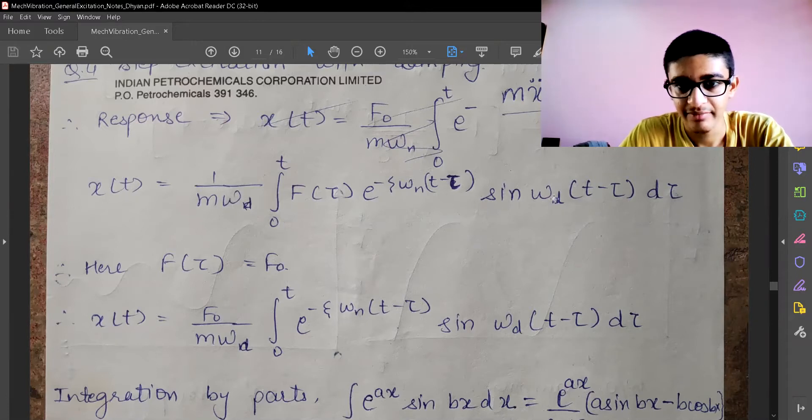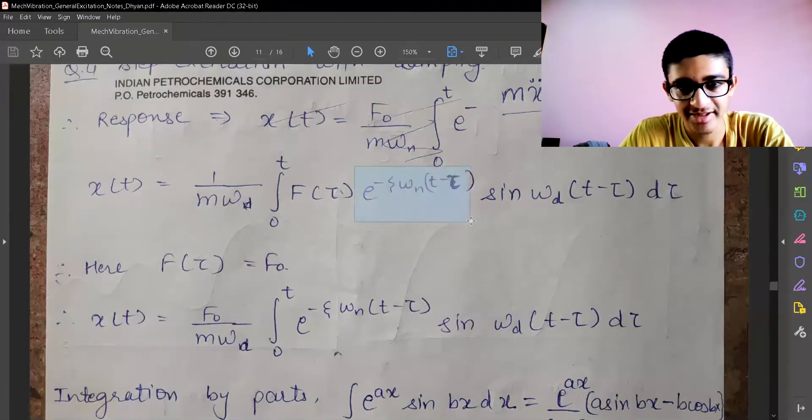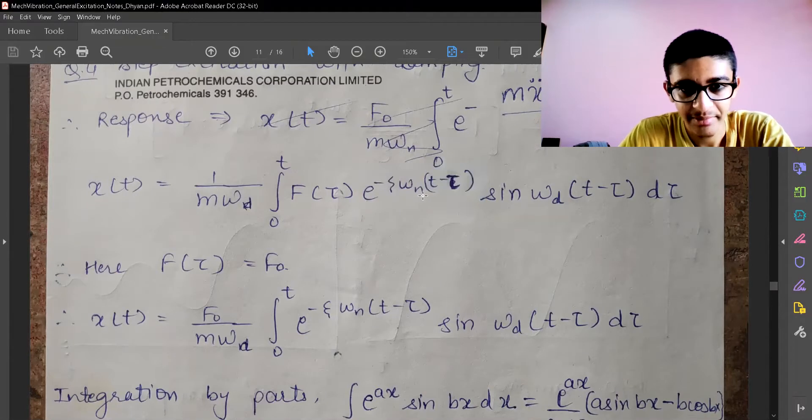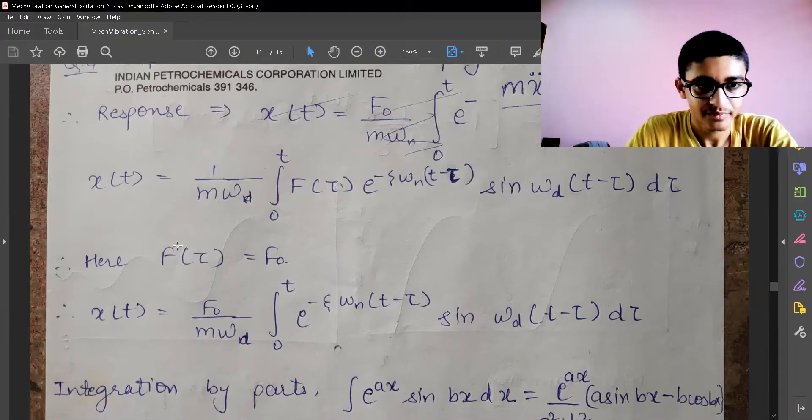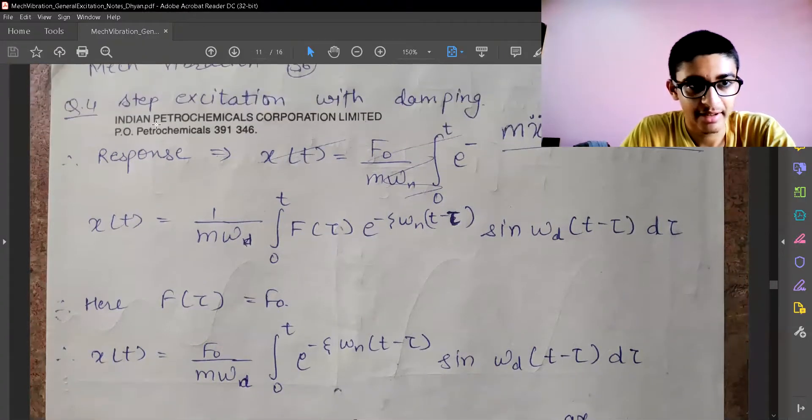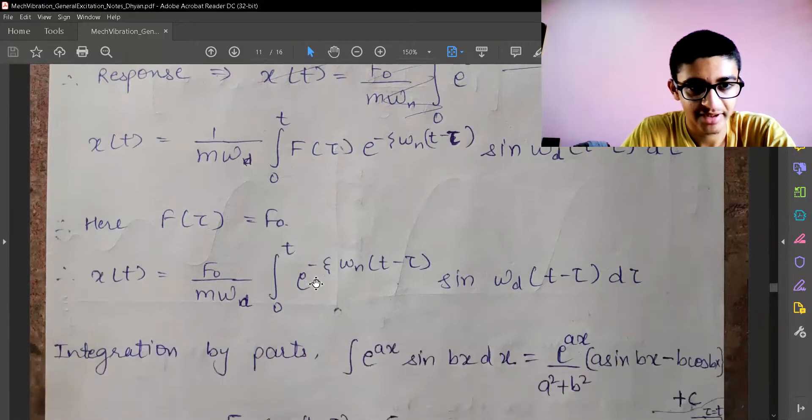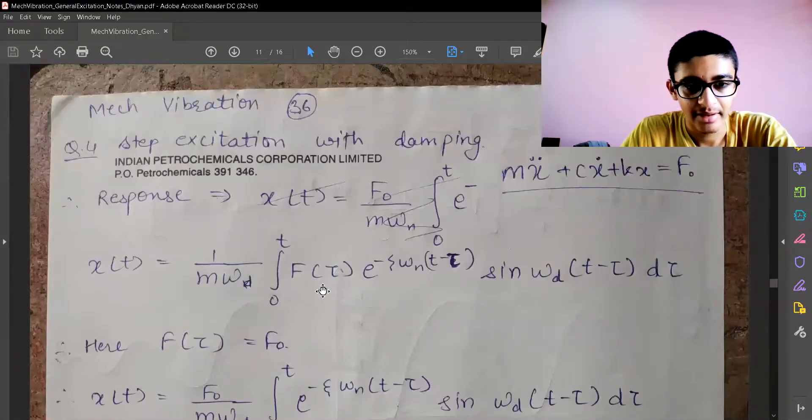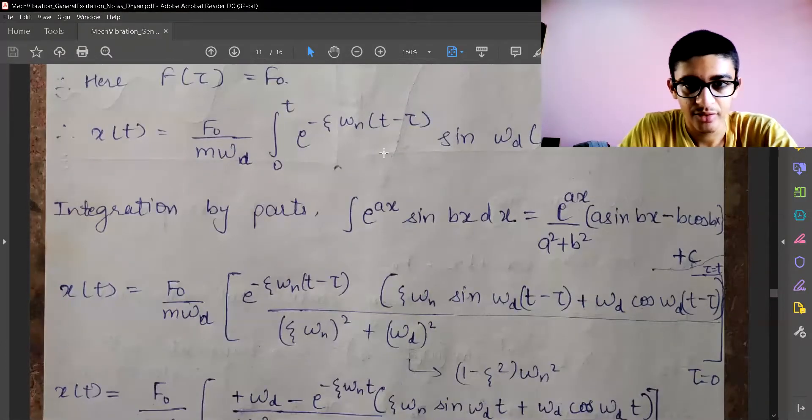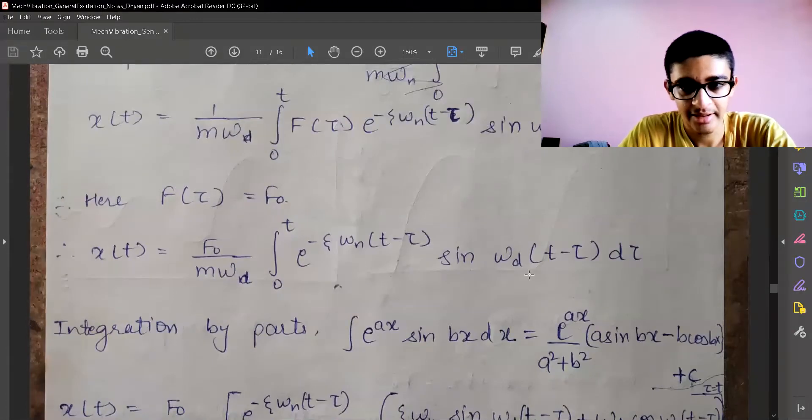Time delay means wherever we had t, we are replacing t by t minus tau. When we introduce damping, we have to introduce this exponential decay factor, and you must remember that we are using omega_n instead of omega_d. We are giving step excitation with a time delay.